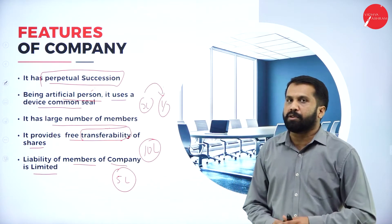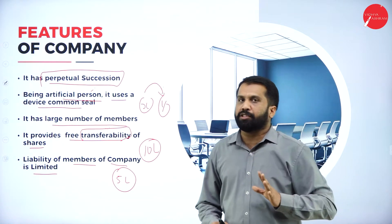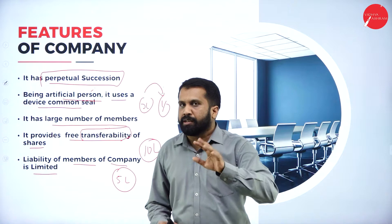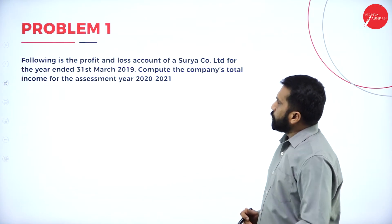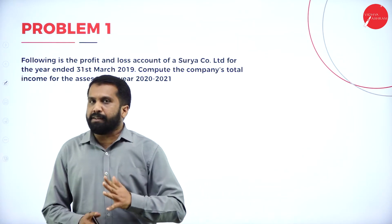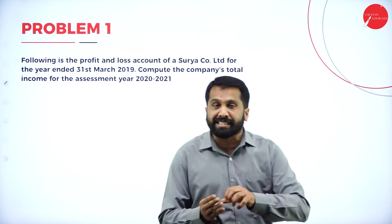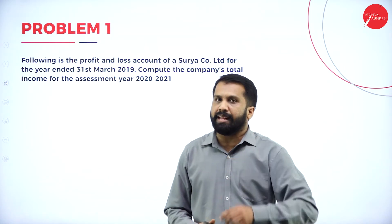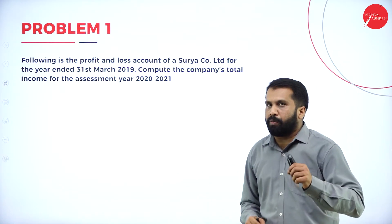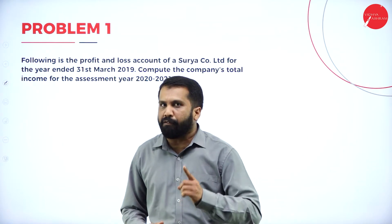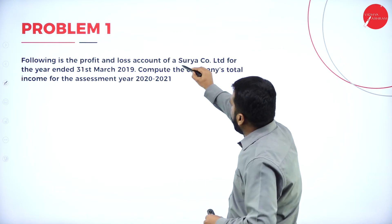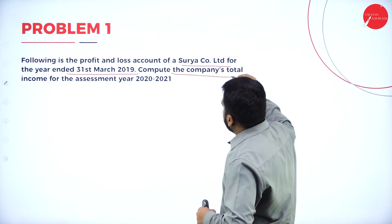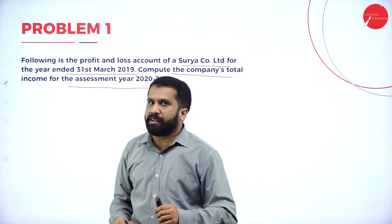These are the features. You are supposed to remember any 5 features for your examination purpose. Now we will go with Problem Number 1. Remember what we did for your assessment of individual and what we did for your business or profession in the previous semester — the same method we will follow, but there are a few changes I will let you know. Following is the profit and loss account of Surya Company Limited for the year ended 31st March 2019. Compute the company's total income for the assessment year 2020 and 2021.